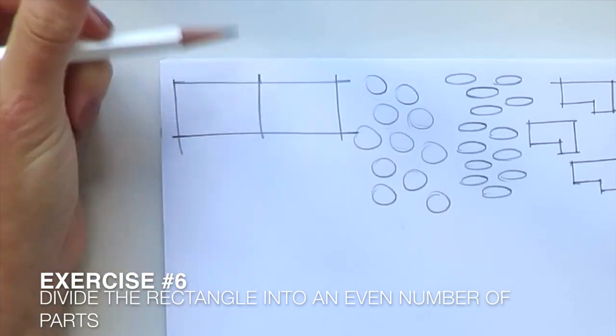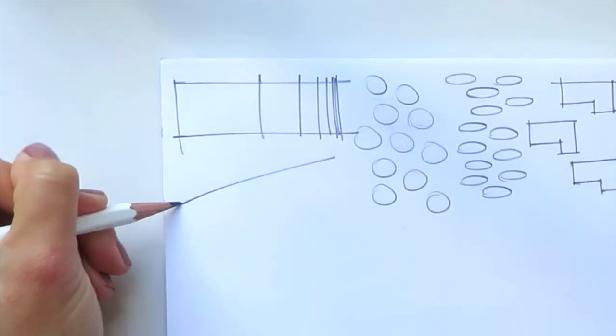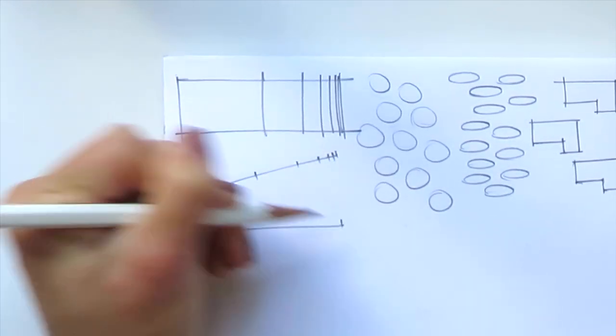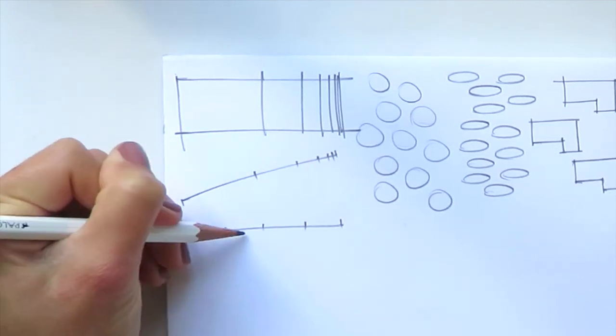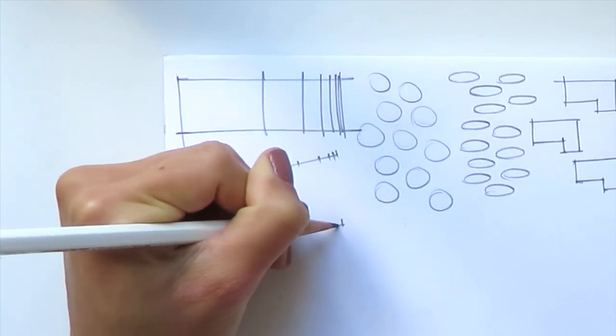Well, next two exercises are very similar. So exercise number six is drawing a rectangular form and we divide it into an even number of parts. Plus, we can work here not with a rectangular form but with a line segment, so we divide the segment by an even number of parts.